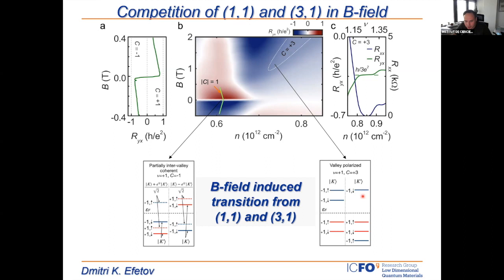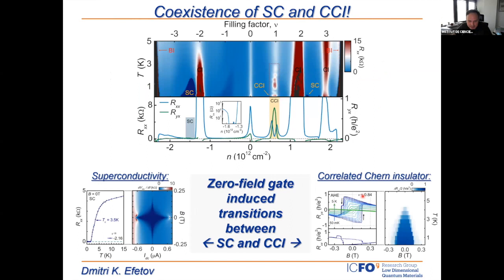Wrapping up: one more thing I want to mention is that these devices are also extremely interesting for future Josephson junction manipulations. These are devices where you can tunably switch from superconducting to magnetic phases. You can gate-tunably create Josephson junctions between superconducting states and paramagnetic and topological states. In principle we are quite excited to hybridize these states, and this is also a potential avenue for Majorana fermion creation in the future.